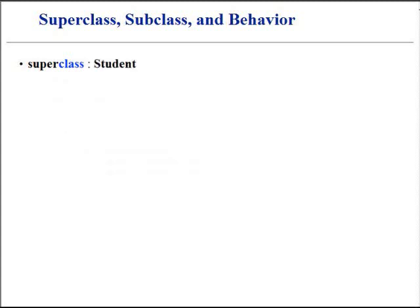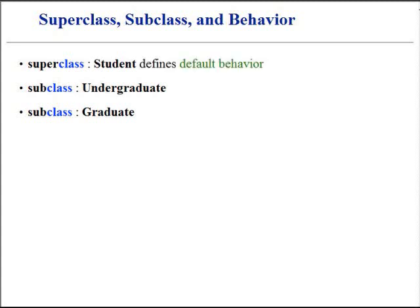Graduate students have an entirely different registration process than other types of students in the school. Therefore, the default registration behavior in the superclass cannot be used by the subclass. To properly address such situation, the programmer who defines the subclass will ignore the default registration behavior. Instead, a new registration behavior, designed specifically for a graduate student, will be introduced.